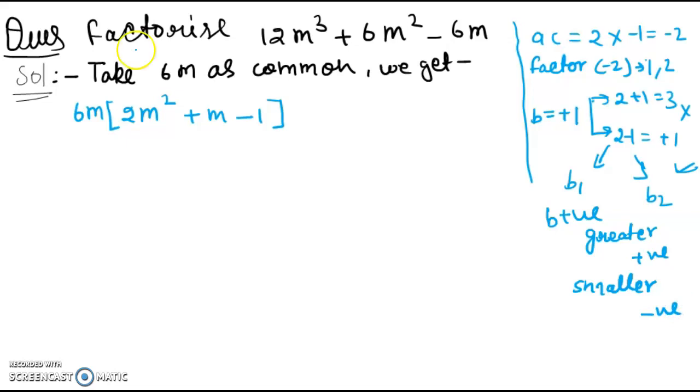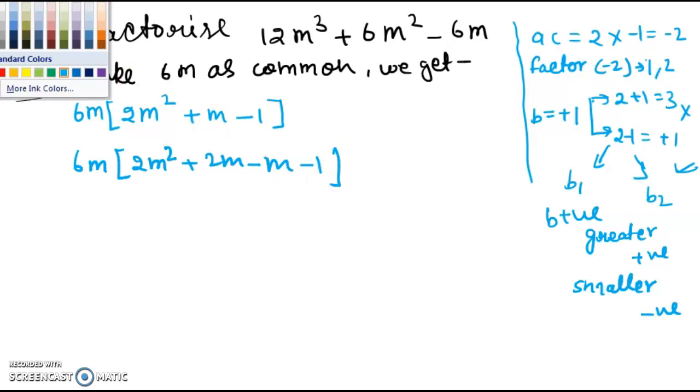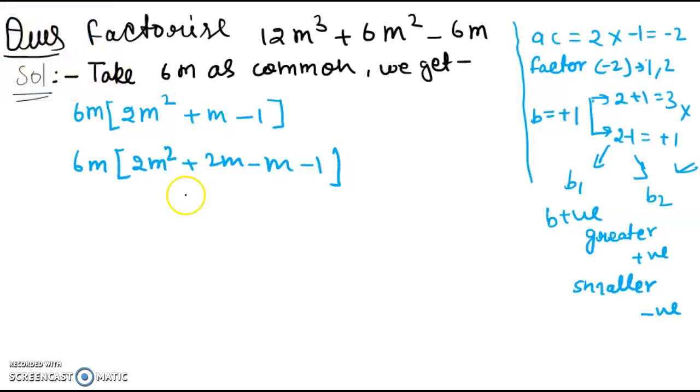So students, we will directly put 6m under bracket 2m square plus 2m minus m minus 1. So students, now you make the group up to 2 terms. First 2 terms here and last 2 terms.